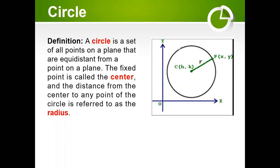So when we talk about a circle, if you take any point — say point P, or P1, or P2, P3, or even P4 — any of the points we took on this circle, the distance from that point to the center will always be the same. For example, the distance between P1 and C is constant, the distance between P2 and C is constant, and so on with P3 and P4.